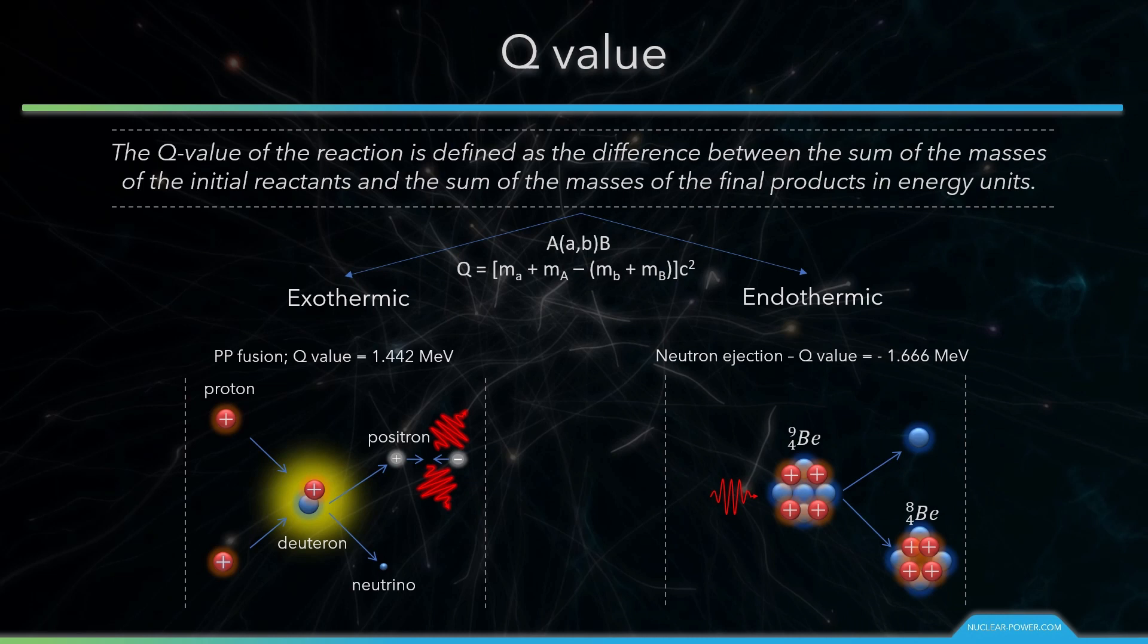For reactions in which there is a decrease in the kinetic energy of the product, Q is negative. The negative Q reactions are endothermic and they require net energy input. A typical endothermic reaction is the production of photoneutrons in nuclear reactors. A high-energy gamma ray can, under certain conditions, eject a neutron from a nucleus. It occurs when its energy exceeds the binding energy of the neutron in the nucleus. In this case, the energy of the gamma ray must be higher than 1.66 megaelectron volts.